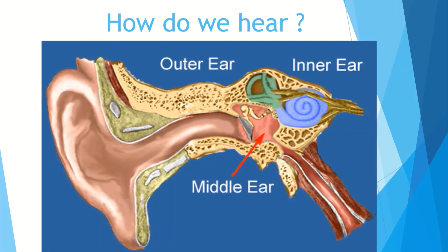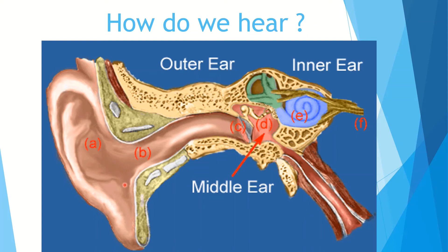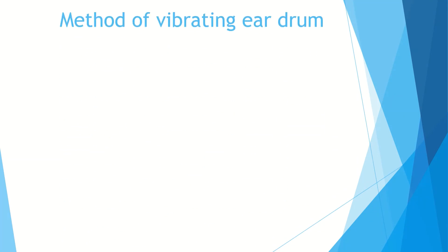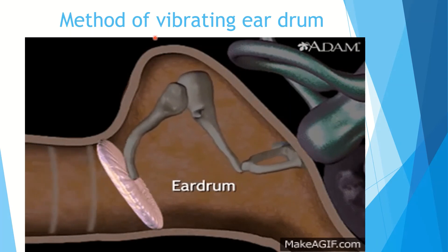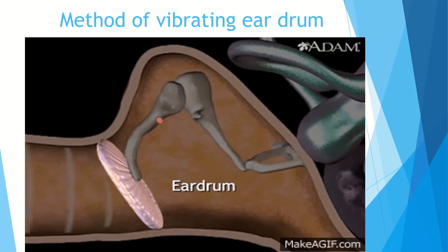The auditory signals enter the external auditory canal, go to the tympanic membrane, pass from the ossicles to the cochlea, and then go to the relevant part of the brain. Due to the auditory signals coming to the auditory canal, the eardrum vibrates.